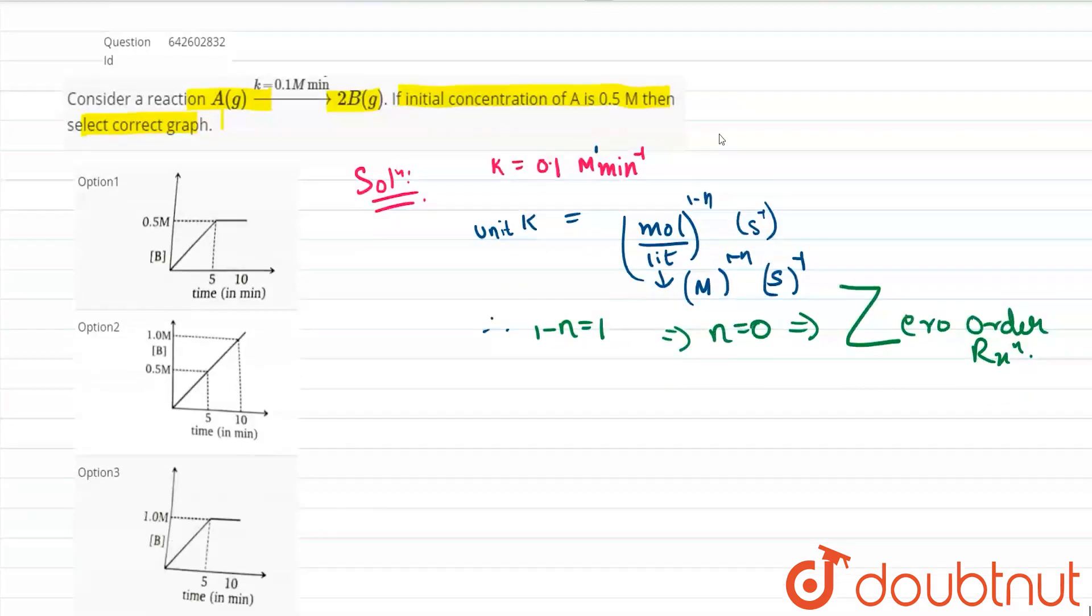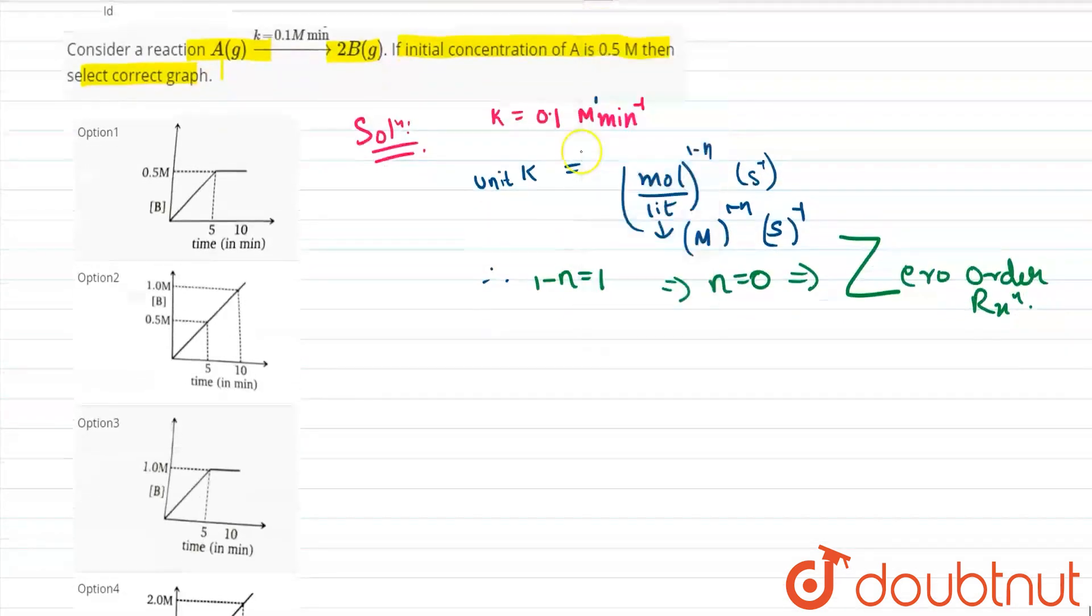Okay, so friends for a zero order reaction now let us move further. We know that it is A gas goes to 2B gas. And let us assume that it happens like A naught minus x and it will be 2x. Okay, so now what further will happen?